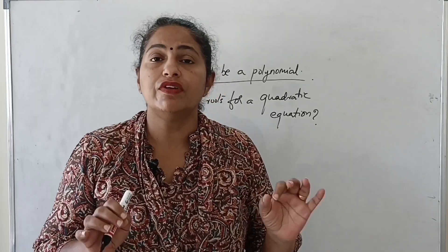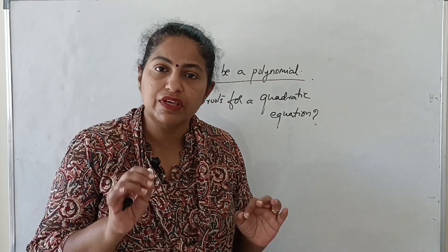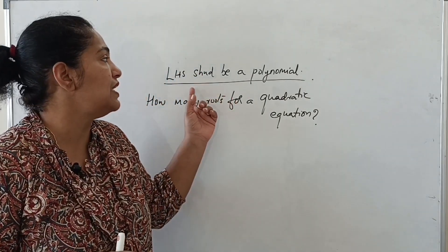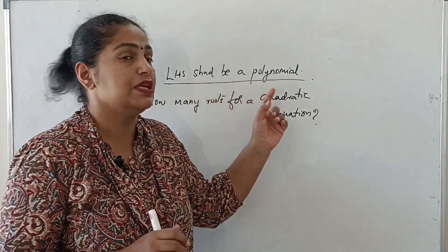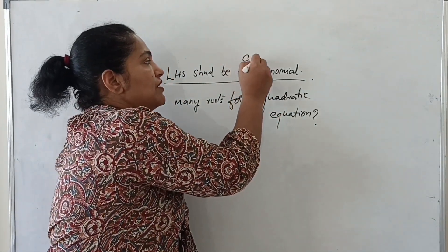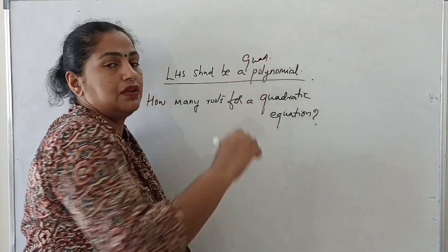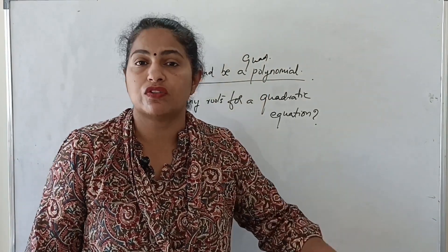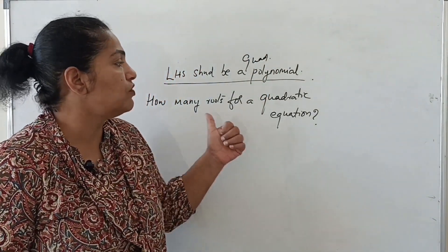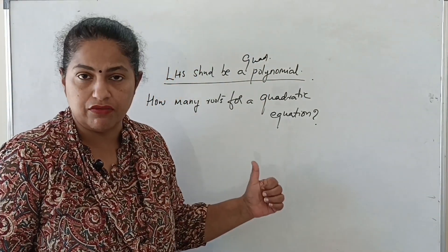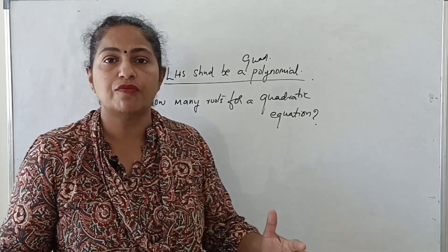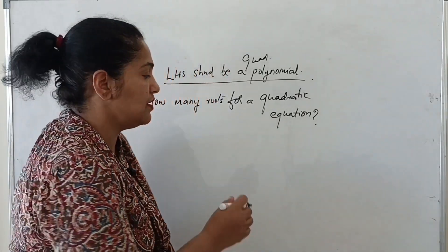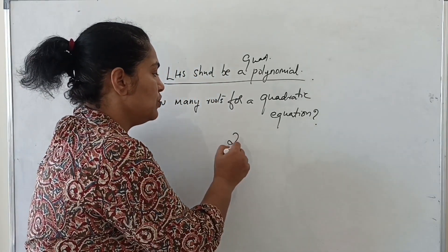So now we are done with the condition to identify a quadratic equation — the LHS has to be a quadratic polynomial. Now we move on to the second part: how many roots does a quadratic equation have? The answer students very often give is 2.